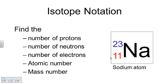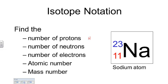Here's sodium. The number of protons is 11, and the number of neutrons for this particular isotope would be 12, because 11 plus 12 is 23. If this is a sodium atom, we have to have an equal number of electrons and protons. The atomic number is 11 and the mass number is 23.